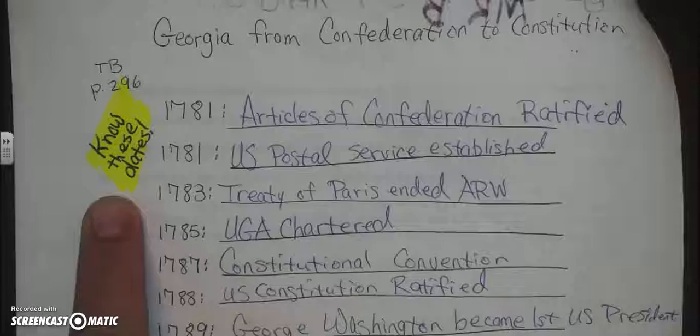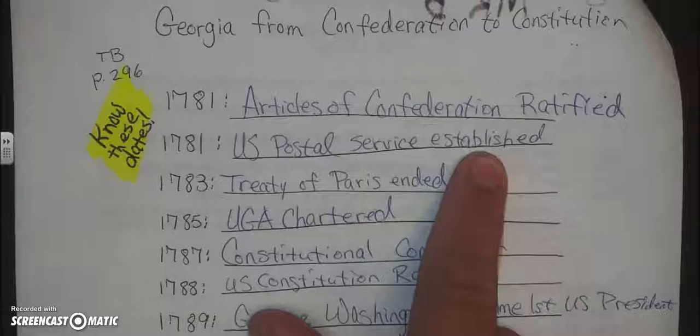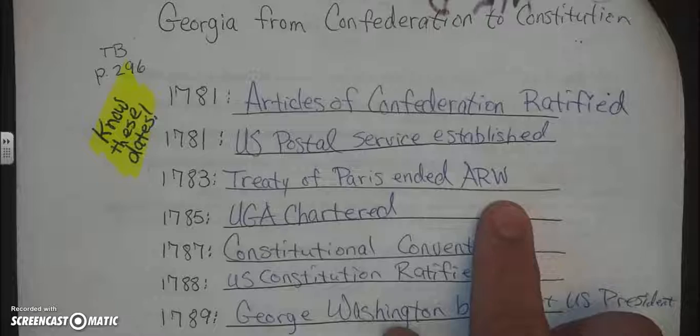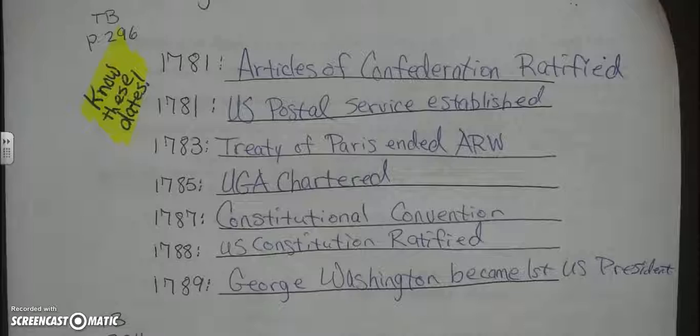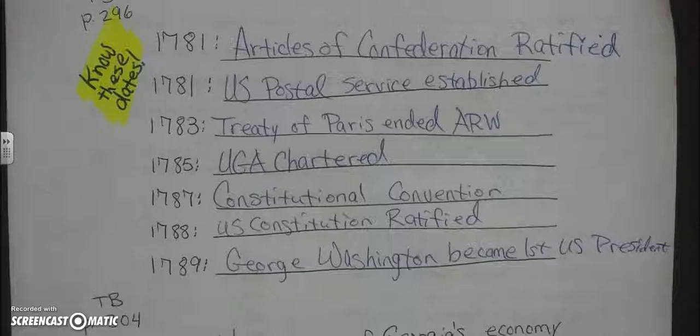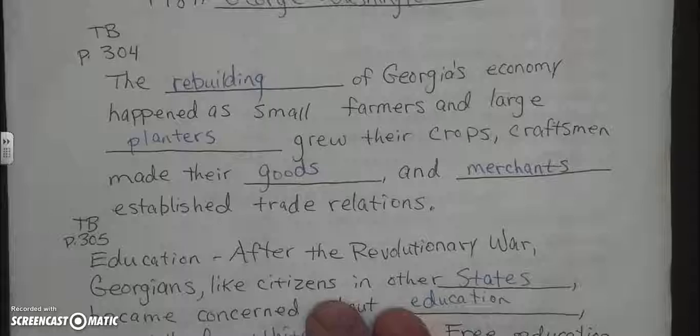You need to know these dates. The Articles of Confederation were ratified in 1781. The US Postal Service was established also in 1781. The Treaty of Paris ended the American Revolutionary War in 1783. The UGA Charter was signed by the Georgia legislature, creating the University of Georgia, in 1787. The Constitutional Convention was in 1787. The US Constitution was ratified in 1788. By 1789, George Washington became the first president of the United States.